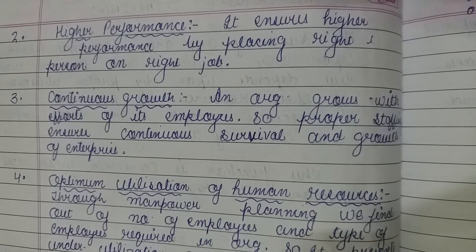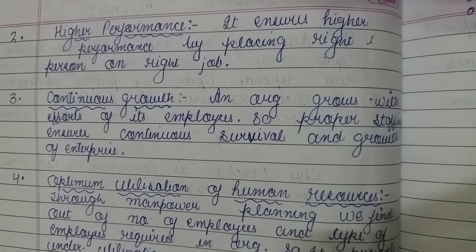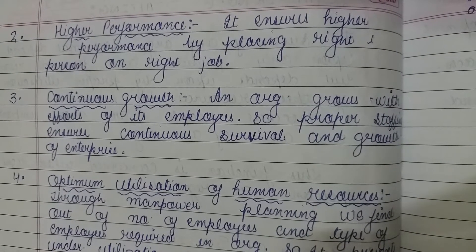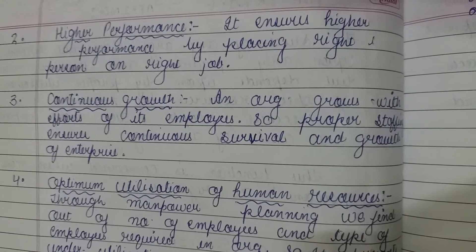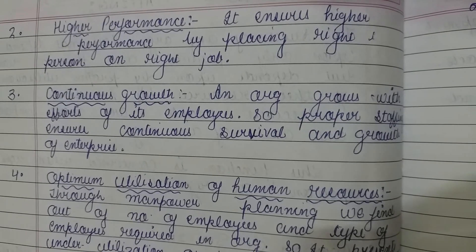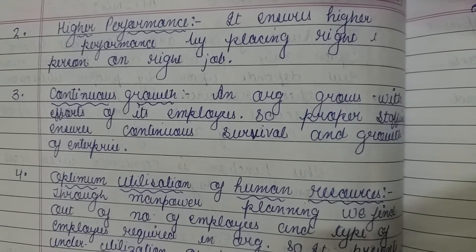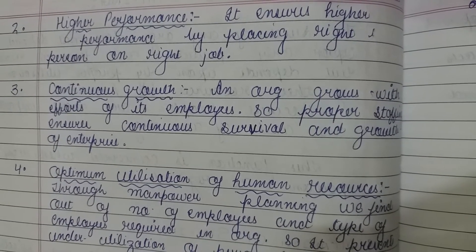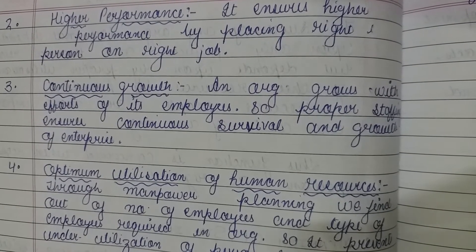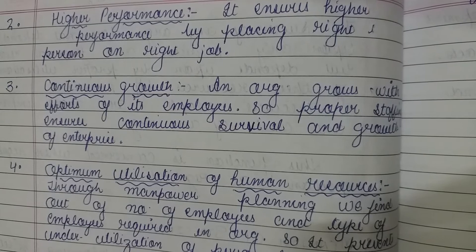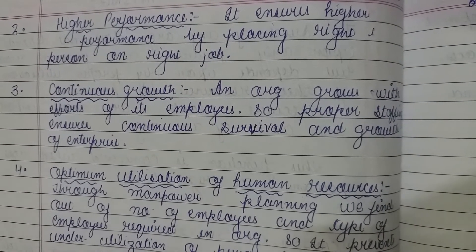Number three: continuous growth. Growth of an enterprise and organization grows with the efforts of its employees. Organization में growth जब ही होती है, जब उसके employees continuous efforts करते रहते हैं. So, proper staffing ensures continuous survival and growth of the enterprise. ये काम जब ही possible होगा, जब सही people को select और recruit किया जाएगा. जब proper staffing होगी, तो उससे organization का survival और growth भी बढ़ता चला जाएगा.